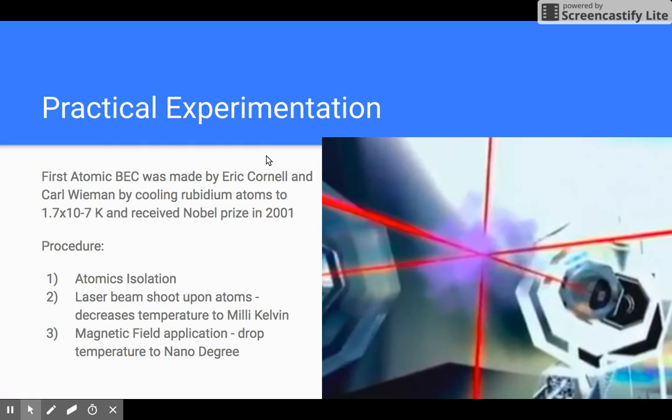The procedure is as follows: First, atoms are isolated from sodium molecules. Then, six concurrent laser beams are applied onto the atoms. After absorption of photons, the atoms emit energy back as photons, slowing them down. This decreases the temperature, but only to millikelvin. The temperature still needs to be dropped to nanokelvin.